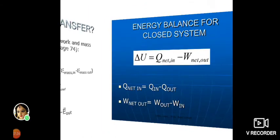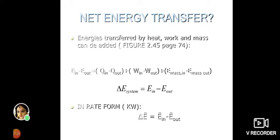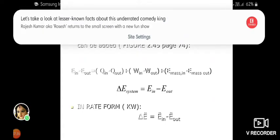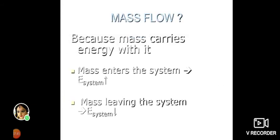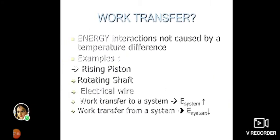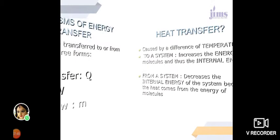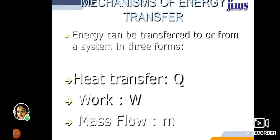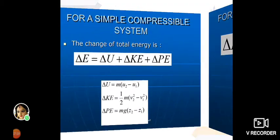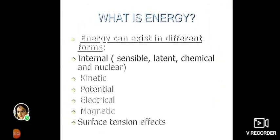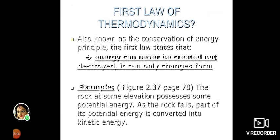To revise: we covered the net energy transfer formula — E_in minus E_out — the energy balance with Q_in and Q_out, mass flow rate, work transfer, heat transfer, and the mechanism of energy transfer. We also discussed what applies to a closed system versus an open system, changes in system energy, and the statement of the First Law of Thermodynamics. Thank you.